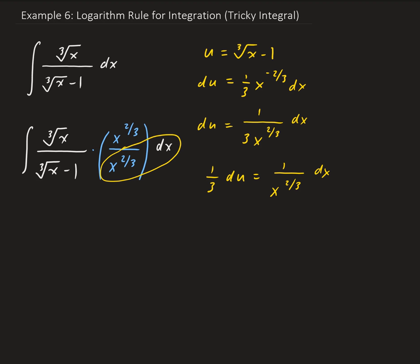For the other part, we go back to our u expression and solve for x. We have u equals x to the 1/3 minus 1, which gives us x to the 1/3 equals u plus 1.